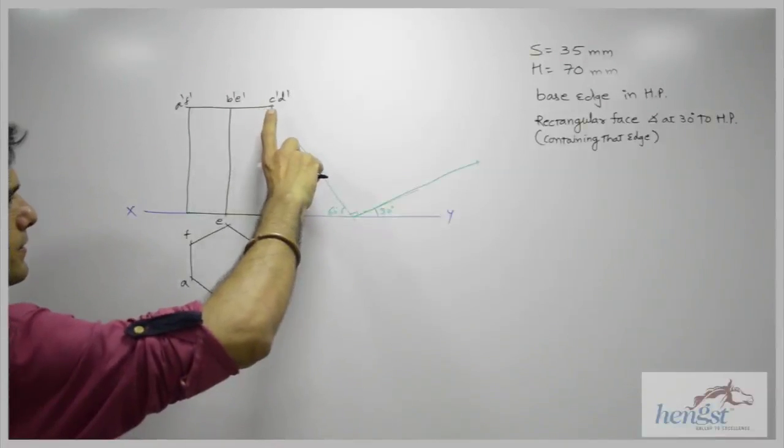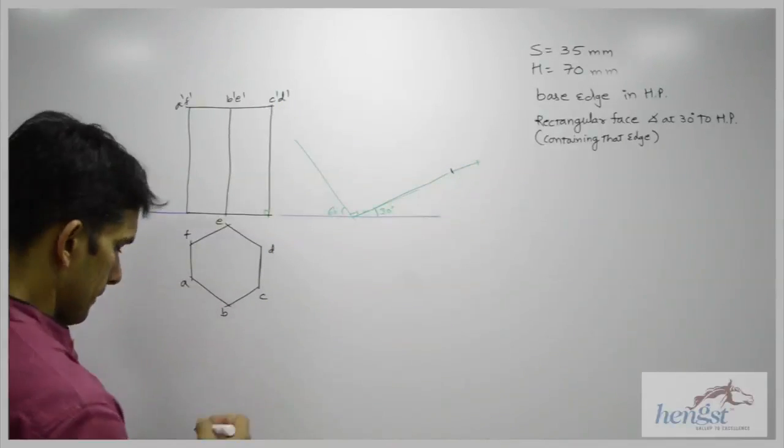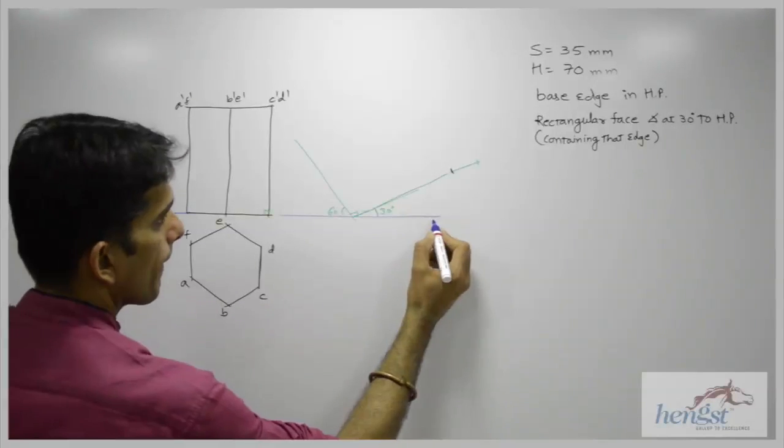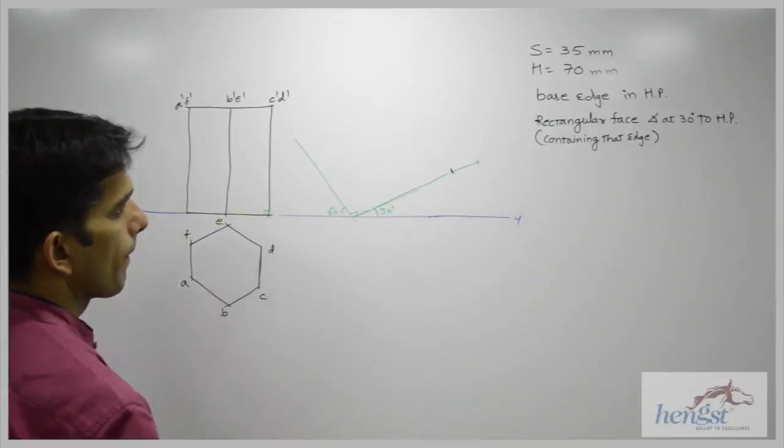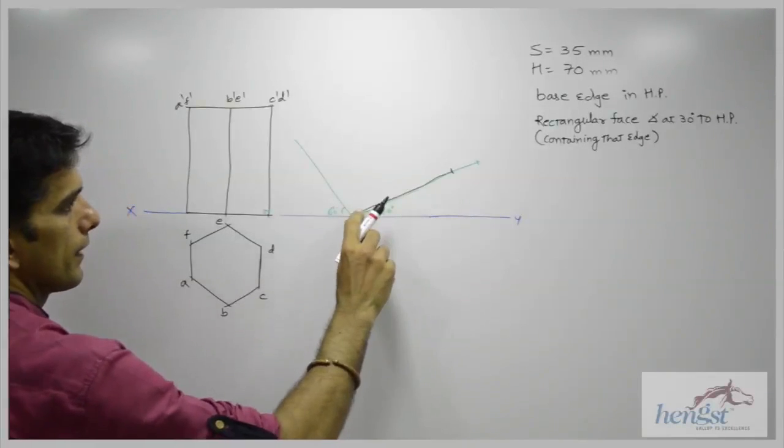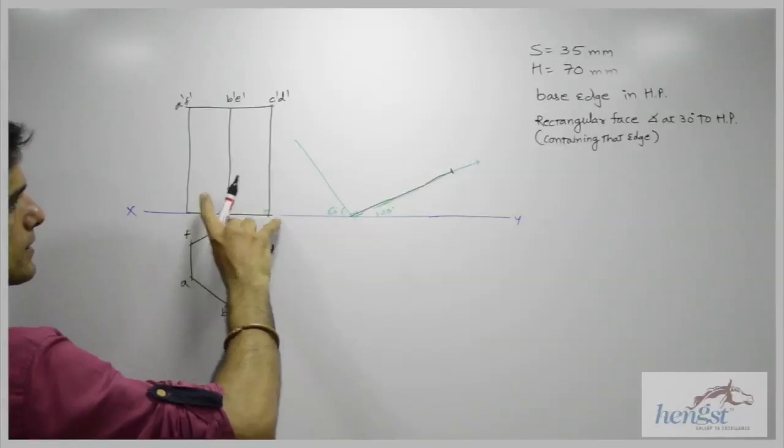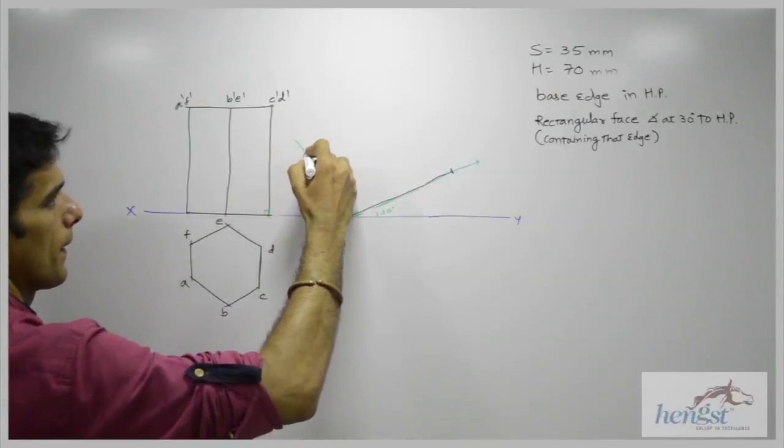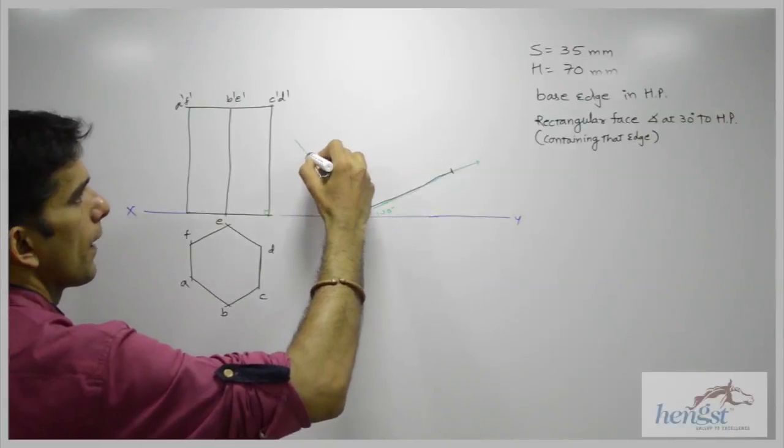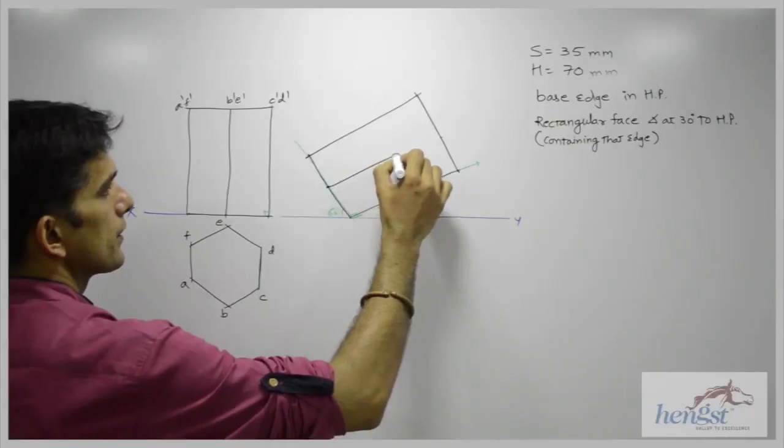Then we will take this distance and cut it on this side. We will take this distance and cut it over here. We will take this distance and cut it over here. So we will join this.